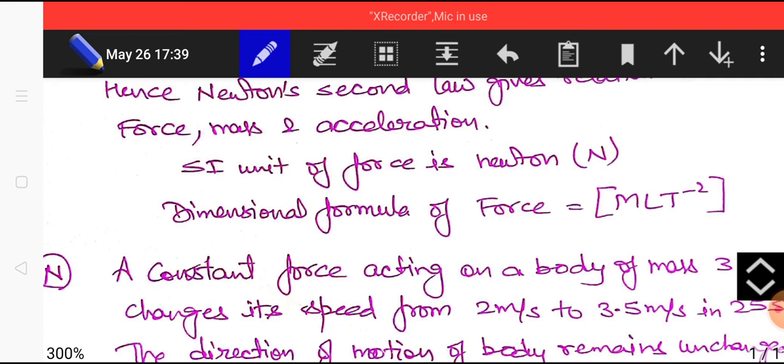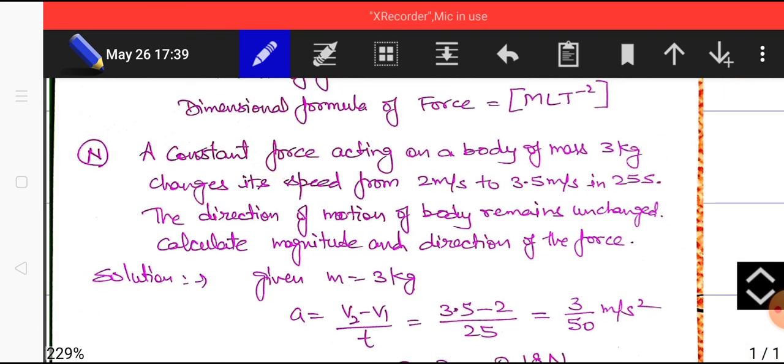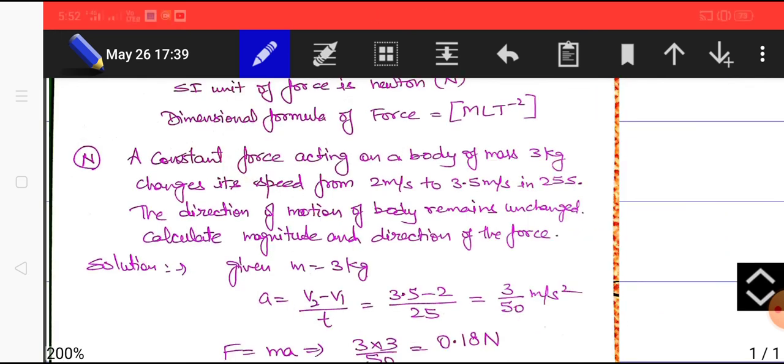SI unit of force is Newton and dimensional formula of force is MLT minus 2. Let us have a look at a numerical. A constant force acting on a body of mass 3 kg changes its speed from 2 meter per second to 3.5 meter per second in 25 seconds.